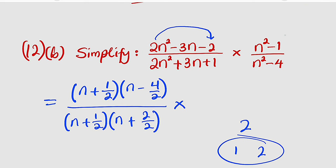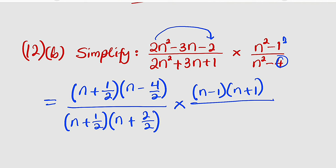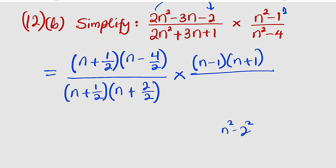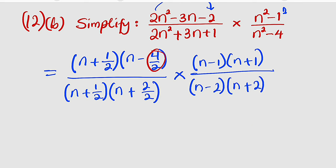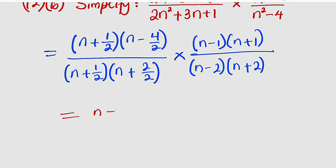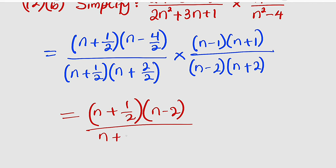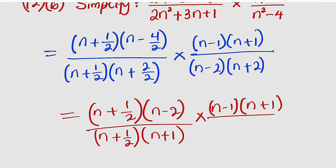Now, n² − 1 is the same as n² − 1², which is a difference of two squares. This factorizes as (n − 1)(n + 1). For the denominator, n² − 4 can be written as n² − 2², also a difference of two squares, giving (n − 2)(n + 2). So we now write the full expression: (n + 1)/2 × (n − 2)/2, divided by (n + 1)/2 × (n + 1) × (n − 1) × (n − 2) × (n + 2).